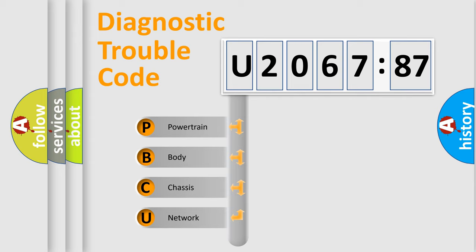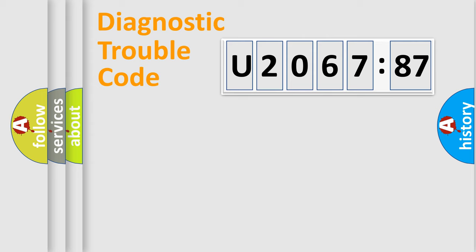We divide the electric system of automobile into four basic units: Powertrain, Body, Chassis, and Network.